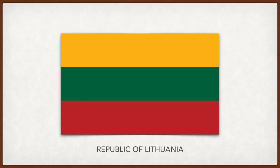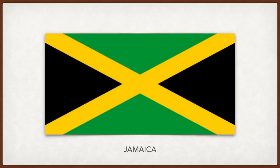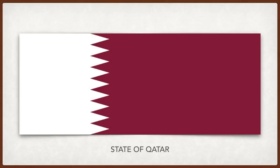Jamaica: black is for the difficulties the nation faced, the yellow stands for sunlight and natural wealth, and green is for agriculture and hope. Qatar: maroon represents the bloodshed in Qatari wars, white stands for peace. The nine serrated edges separate the colors and signify Qatar's inclusion as the ninth member of the reconciled Emirates of the Persian Gulf at the conclusion of the Qatari-British treaty in 1916.